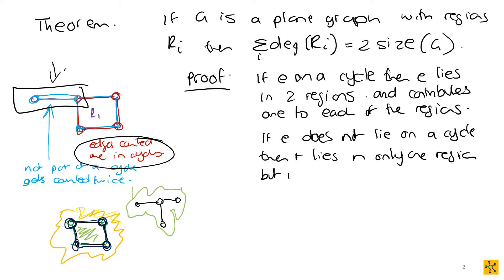So we know it only lies in one region, but it is going to be counted twice in the degree of that region. And that is because we need a closed walk, so we need to get back somewhere. So like even with this one, if we started here, we had one, we still had to go there and come back. So every edge which is not part of the cycle gets counted twice in the degree of that one singular region that it's part of.